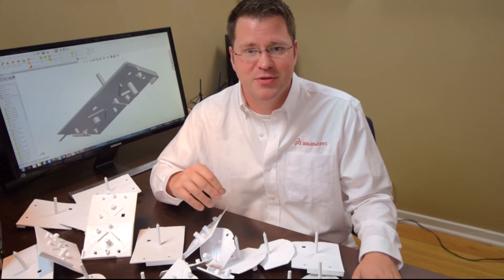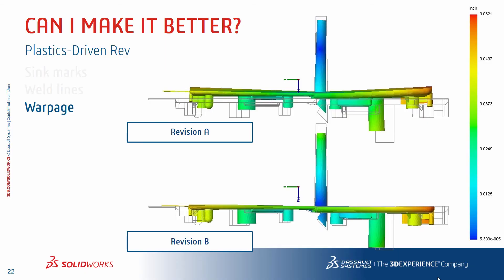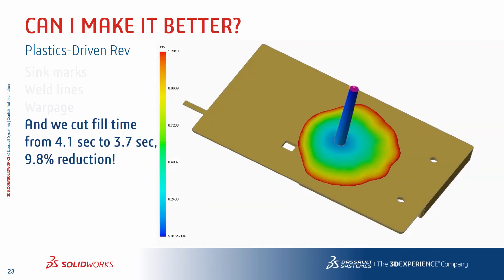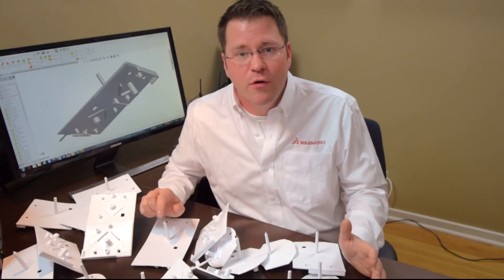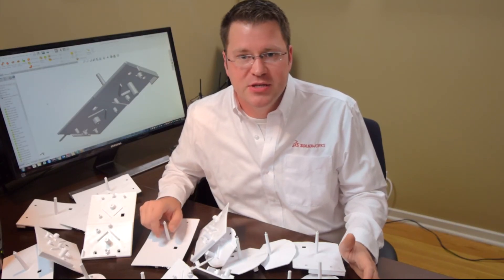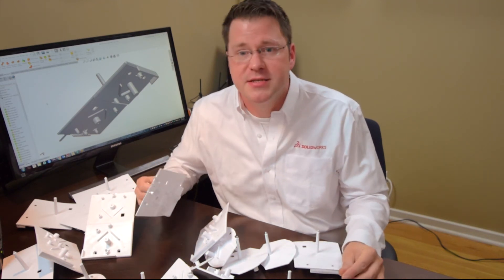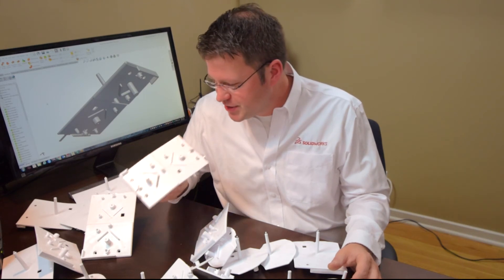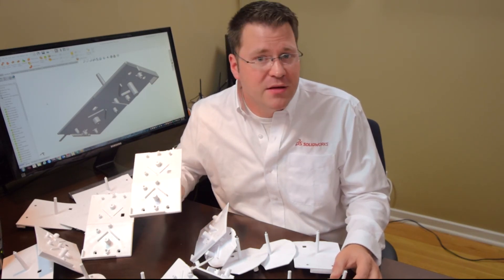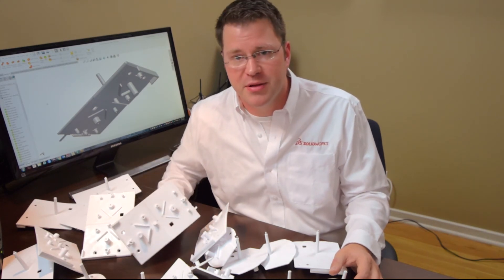Of course, the warpage. The top was pretty bad in the first revision — there were a lot of thick areas that were really changing the cooling times and creating that internal stressing. Looking at the warpage by reducing some of the thicknesses of the features and the overall body, we've done a great job removing that out-of-plane warpage. We cut the fill time from 4.1 seconds to 3.7 seconds — about a 10% reduction. So overall, we answered some very basic questions today. Is this part going to fill? Yes, with the right settings. But we also saw it wasn't going to look very good, so I was able to use some of the insight from Plastics and then validate some design decisions by rerunning through the plastics analysis.